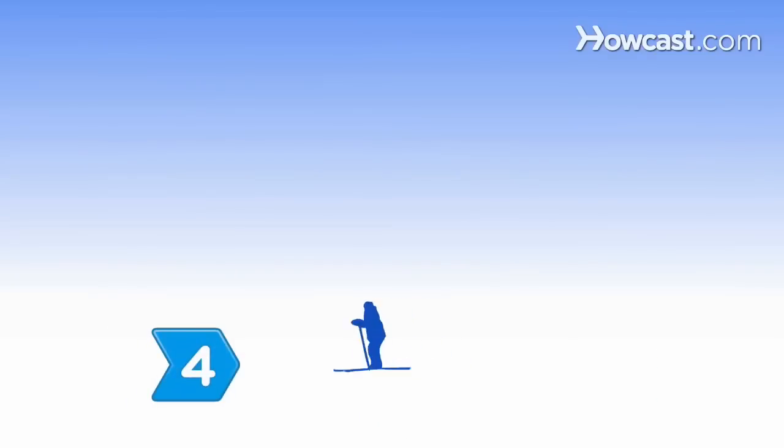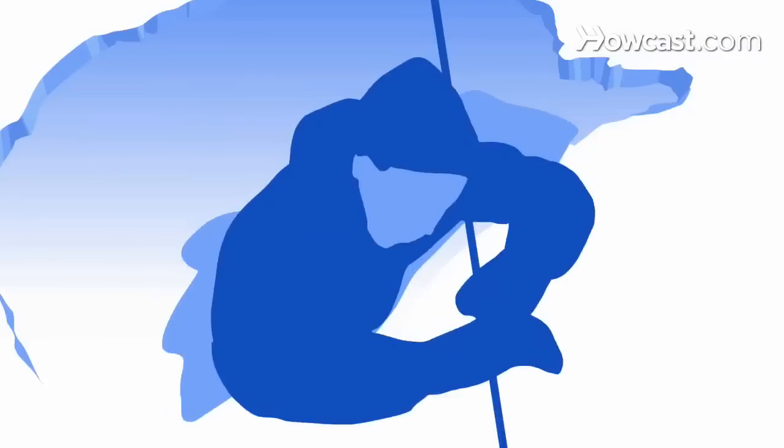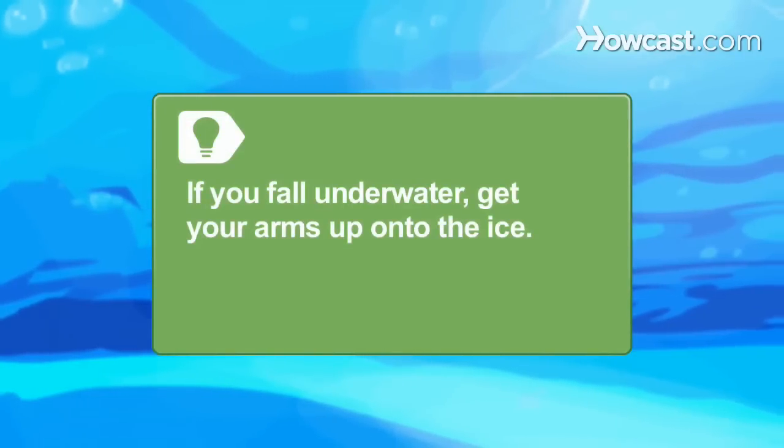Step 4. If you feel the ice beneath you cracking, grip the pole tightly or spread your arms straight out if you have no pole to break your fall and keep your torso above the water. If you fall completely underwater, swim up to the hole you fell through and use your elbows to pull your body up enough to get your arms on the ice.